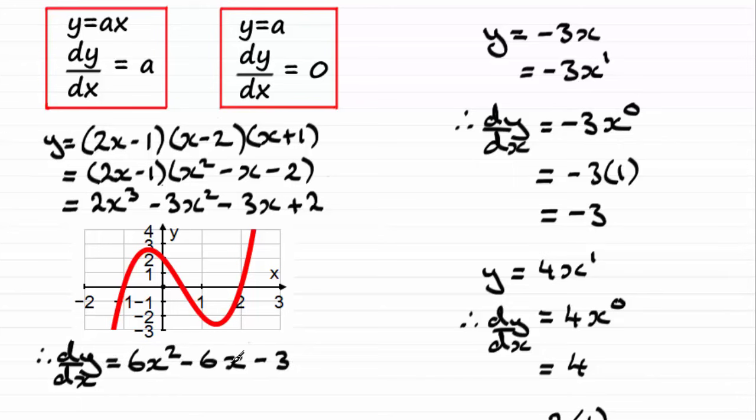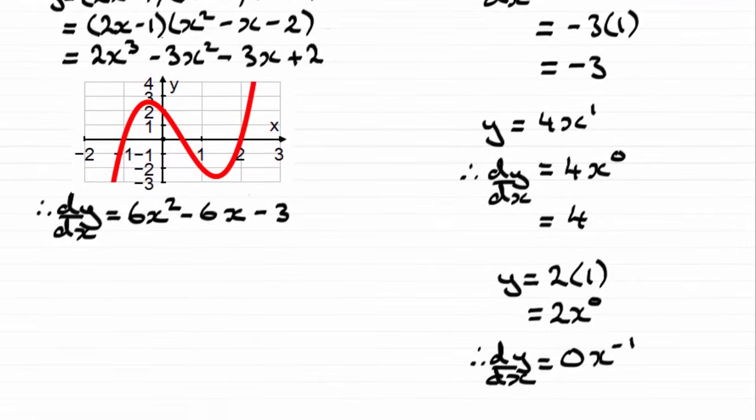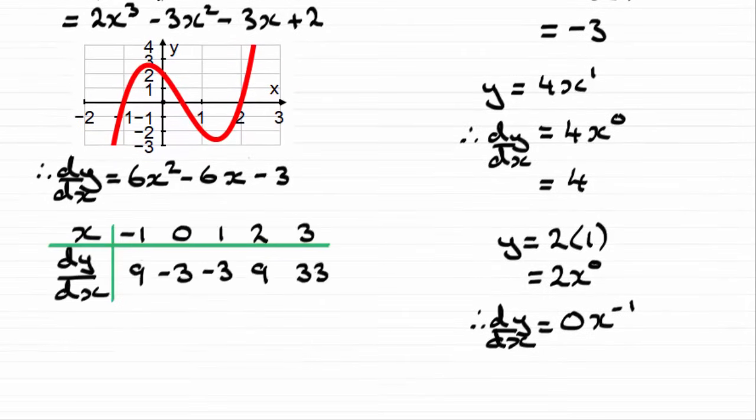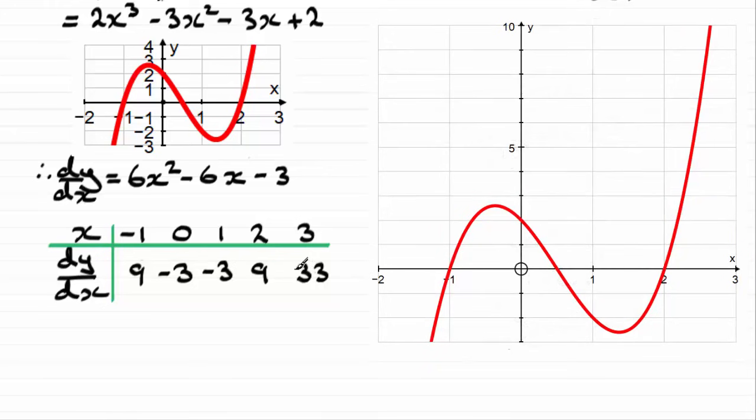And by substituting various values of x into here, I can find out how steep this curve is or the rate of change of y with respect to x at any point x. And I've got a table of values here. I've got values of x going from minus 1 to 3. And I've substituted these values of x into the equation for dy by dx. You can check them out. But you can see that when x is negative 1, I get a positive gradient of 9. And that's very steep. For every 1 unit across we can imagine going 9 units up if I had a tangent drawn there.